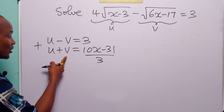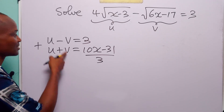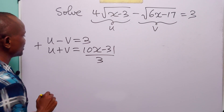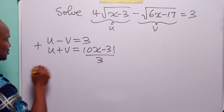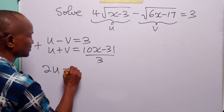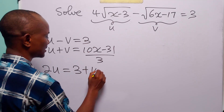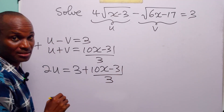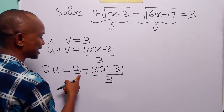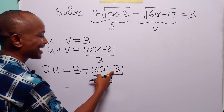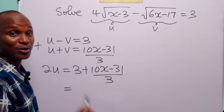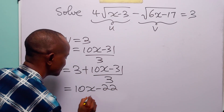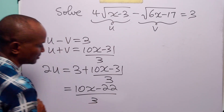If we add these two equations, we eliminate v, because -v plus v equals 0. We are left with 2u = 3 + (10x-31)/3. Converting: 3 = 9/3, so 2u = (9 + 10x - 31)/3 = (10x - 22)/3.